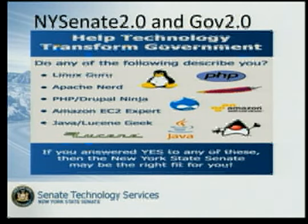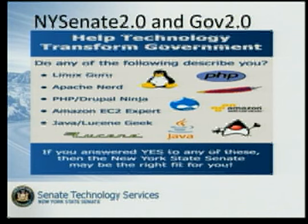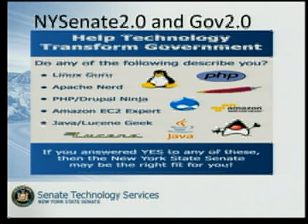This is an example of a poster board we used at a recent career fair at RPI. It generated a lot of interest. Students aren't generally looking for government employment — they're looking for the Googles and Microsofts of the world. But we are doing really awesome stuff at the Senate and just need to advertise it. You can see 'Linux Guru,' 'Apache Nerd,' 'Drupal Ninjas' — it attracted a lot of students to our booth. We interviewed several of them and recently hired another RPI grad graduating in December. We're doing open source not just because it's cool, but because it makes a lot of economic sense.